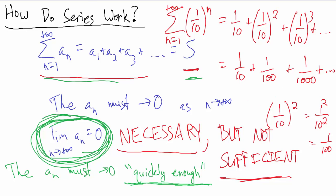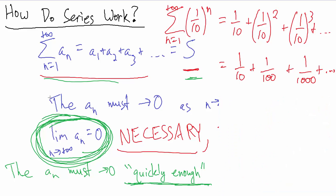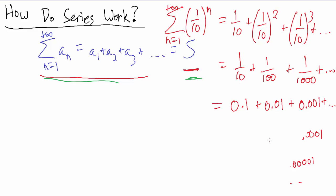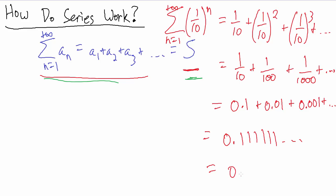Let's convert those to decimals and see what it looks like. This equals: one-tenth is 0.1, one one-hundredth is 0.01, one one-thousandth is 0.001, and that pattern continues. Each next term has one more zero before the one. So if we put all those together, this would actually be 0.1111... with the ones infinitely repeating. Another way of writing that is 0.1 with a bar over it to denote the ones are infinitely repeating.